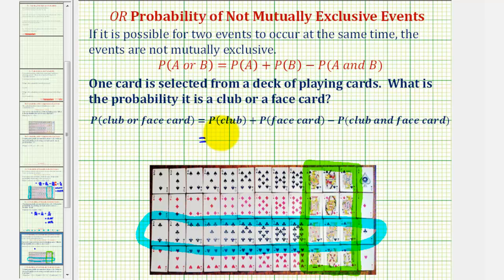The probability of a club would be 13 out of 52, plus the probability of a face card, that would be 12 out of 52.